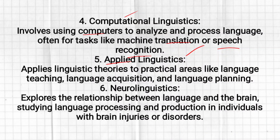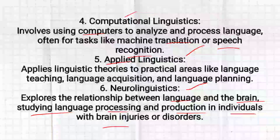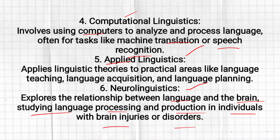The last branch is neurolinguistics. Neurolinguistics explores the relationship between language and the brain, studying language processing and production in individuals with brain injuries or disorders — specifically, how a person uses language after a brain injury.